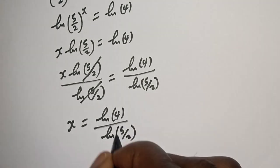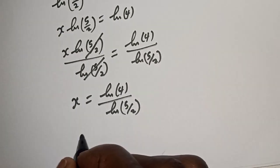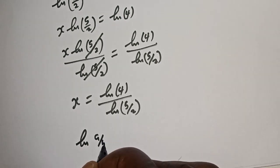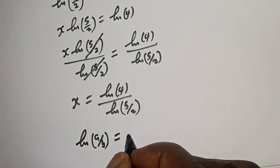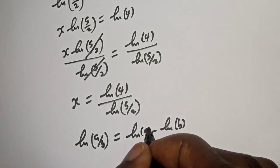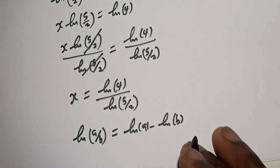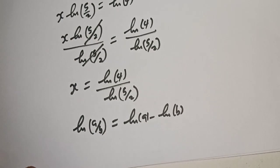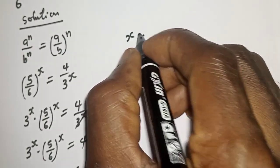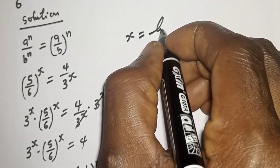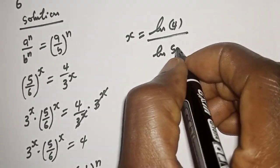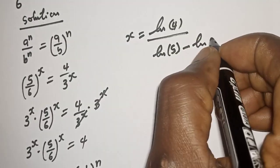Also take note that natural log of 5 over 2 can be expanded using the logarithm rule: natural log of a minus natural log of b. So natural log of 5 over 2 is equal to natural log of 5 minus natural log of 2.